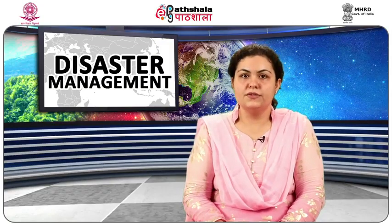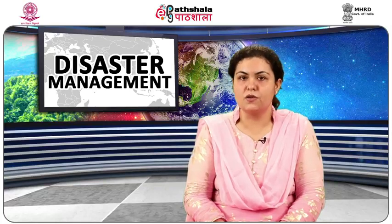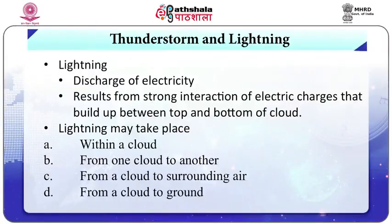Normally, a combination of these phenomena triggers with vertical wind shear to generate severe thunderstorms. Lightning is a discharge of electricity — a giant spark — which usually occurs in the mature thunderstorm. Lightning may take place within a cloud, from one cloud to another, from a cloud to surrounding air, or from a cloud to the ground.